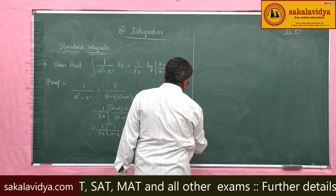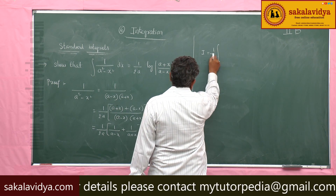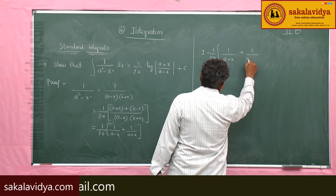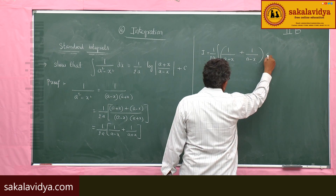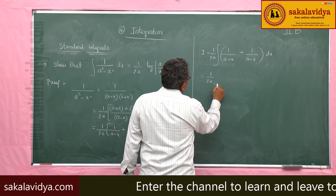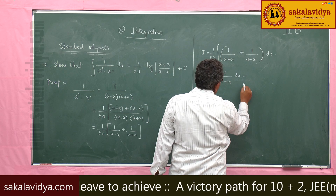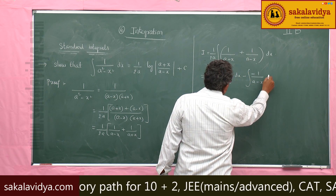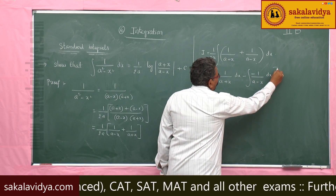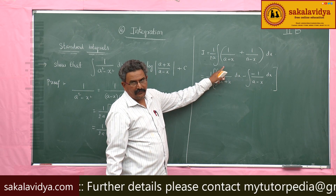So the integral I = (1/2a)∫[1/(a + x) + 1/(a − x)] dx. Using the substitution method, the derivative of (a + x) is 1, so ∫1/(a + x) dx = log|a + x|. Similarly, ∫1/(a − x) dx = −log|a − x|, since the derivative of (a − x) is −1.